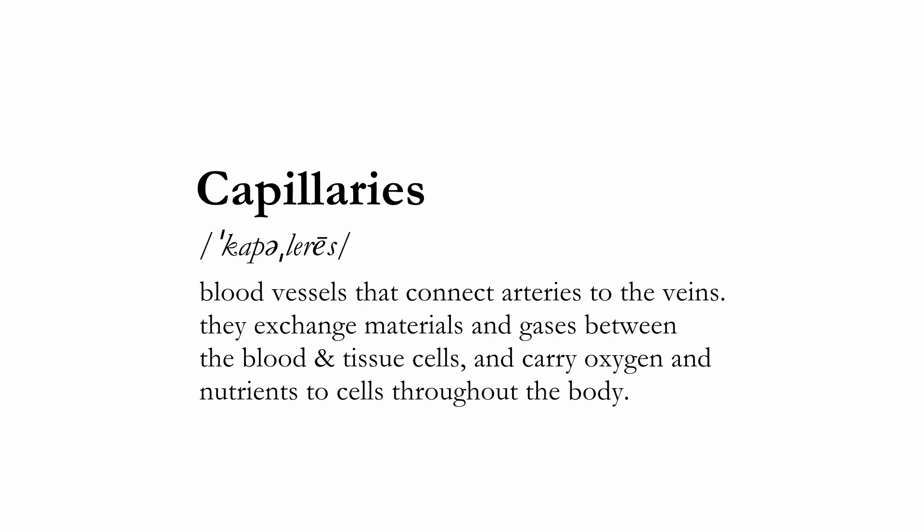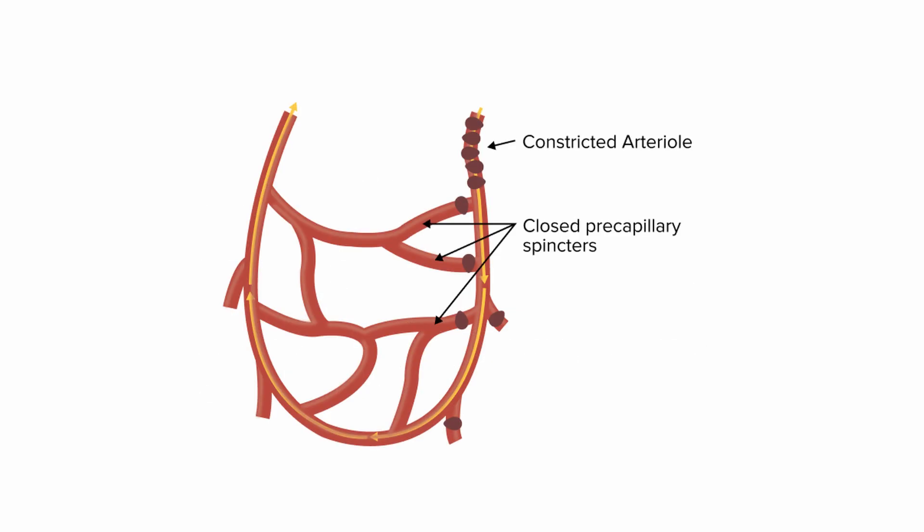Next are capillaries. These are blood vessels that connect arteries to the veins. They exchange materials and gases — specifically oxygen and carbon dioxide — between the blood and tissue cells, and carry oxygen and nutrients to cells throughout the body. In the lungs, the capillaries absorb oxygen from inhaled air into the bloodstream and release carbon dioxide for exhalation. Capillary blood flow is regulated through a ring of smooth muscle called the pre-capillary sphincter, which encircles the capillary and controls its diameter through constriction and relaxation.